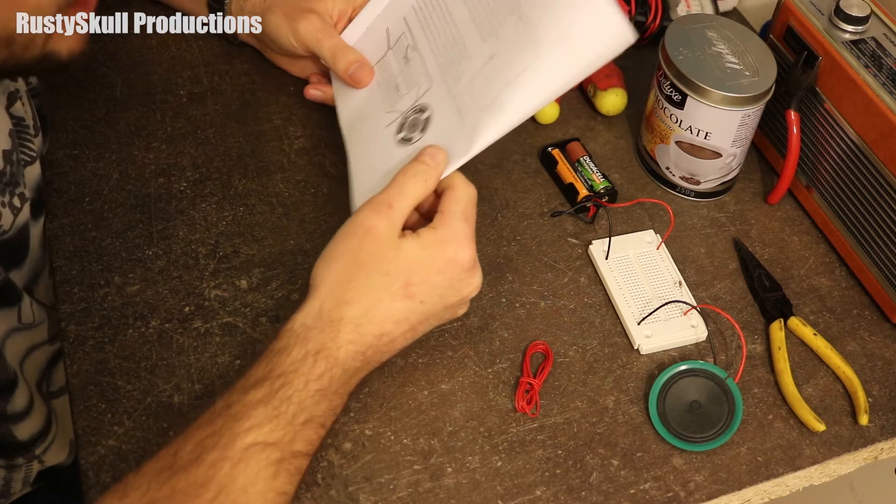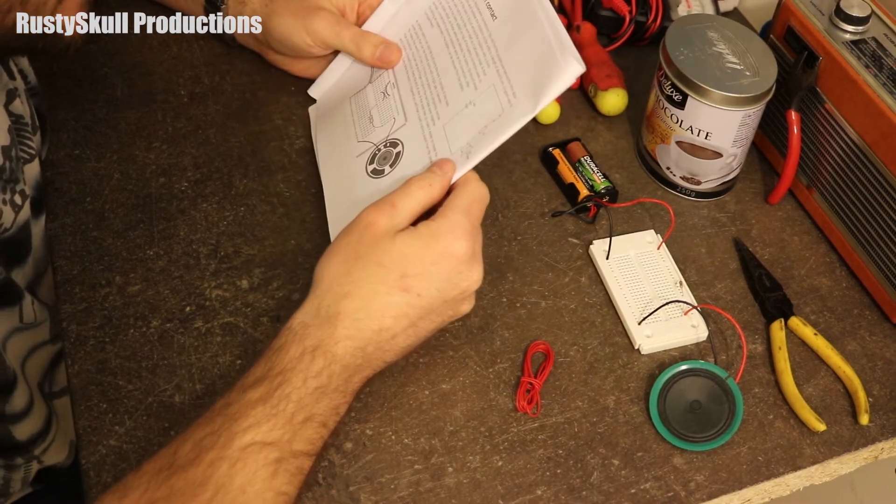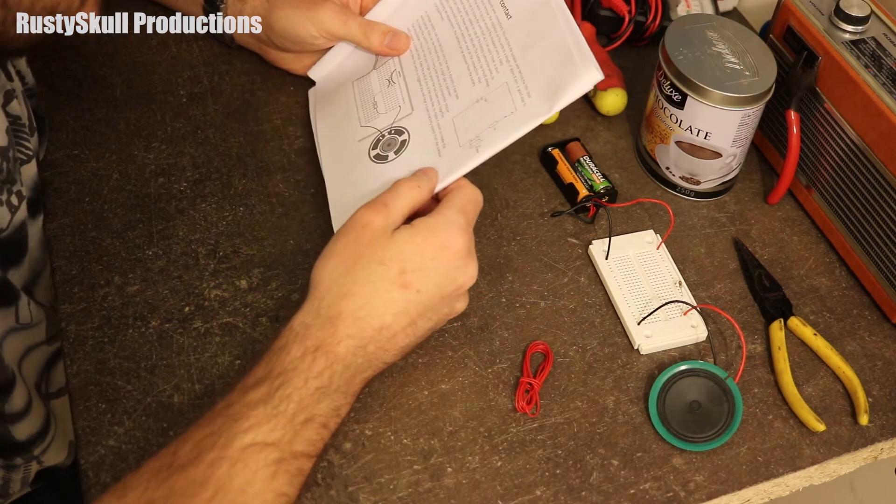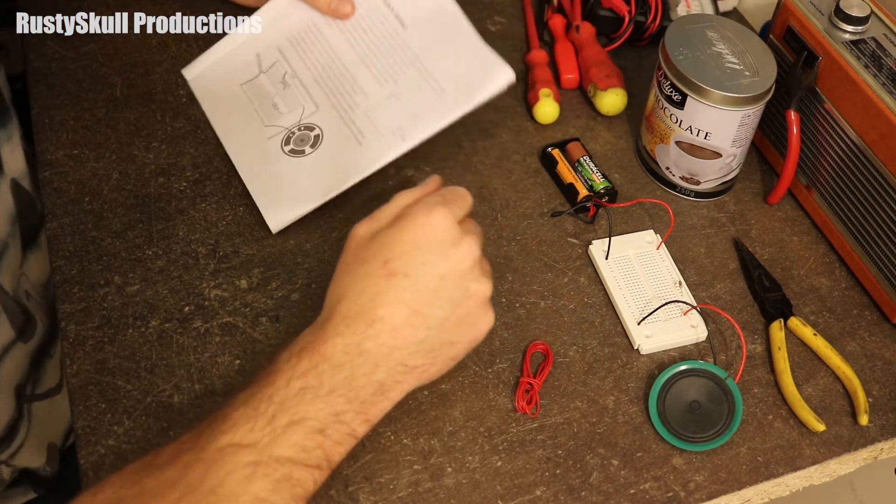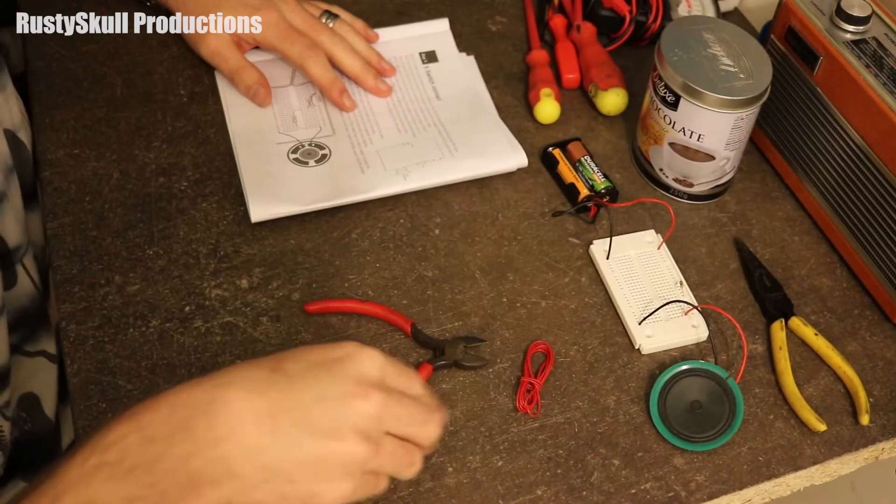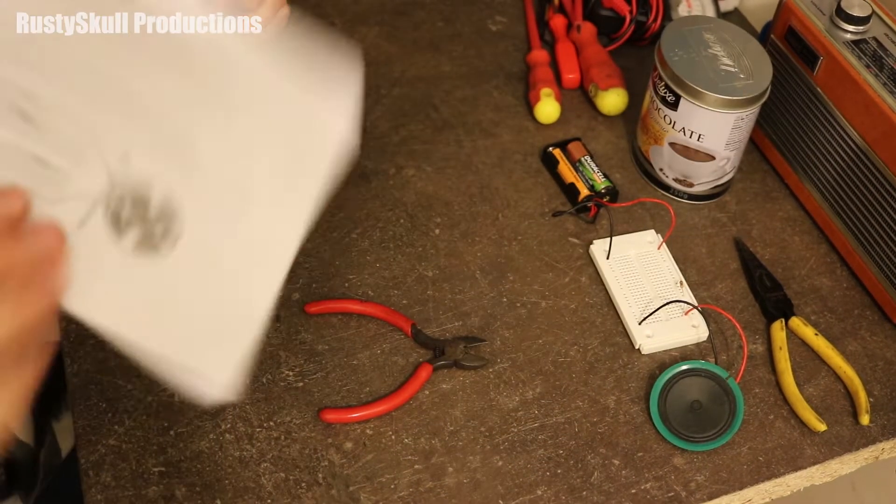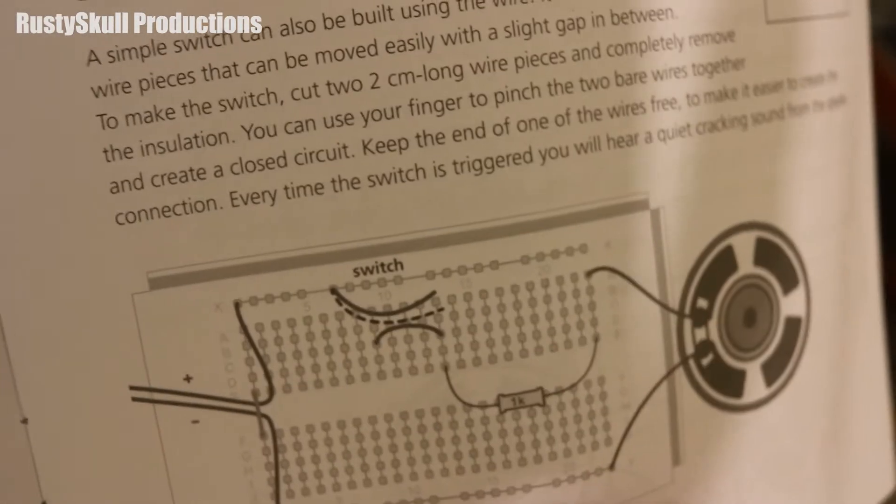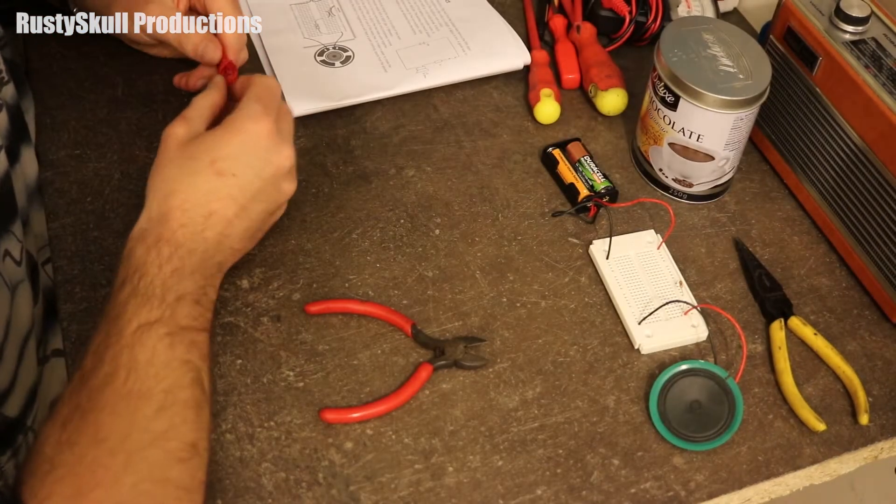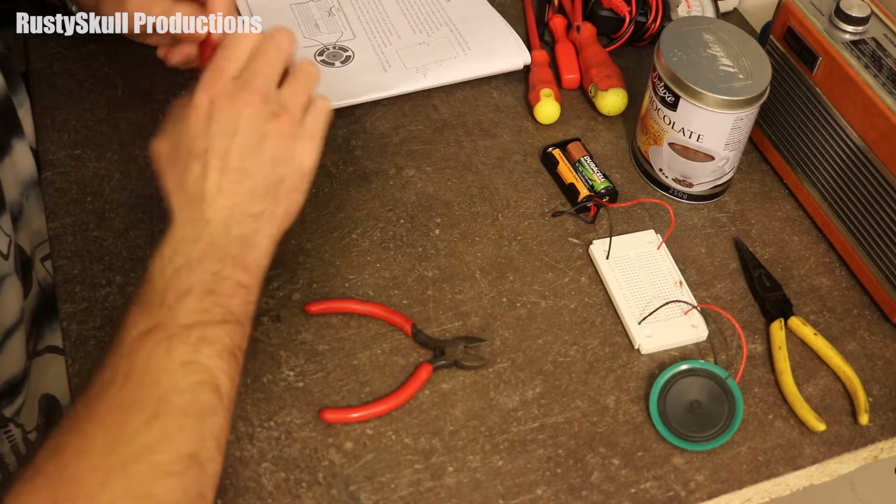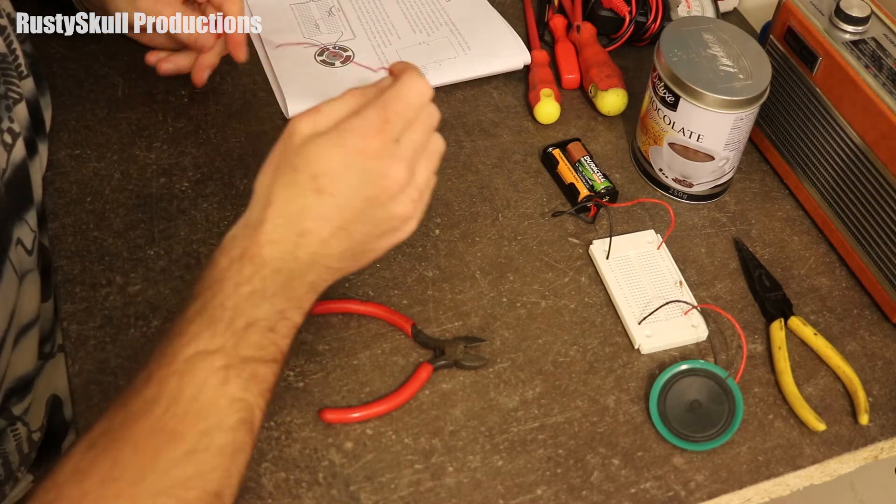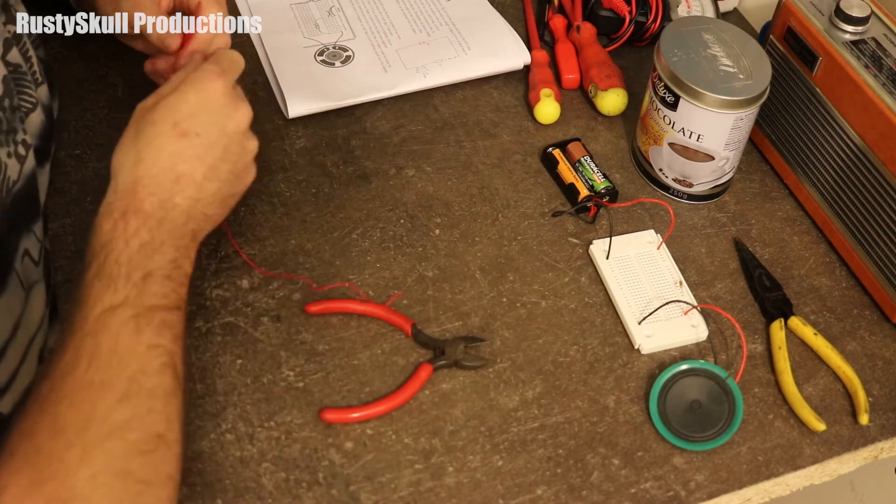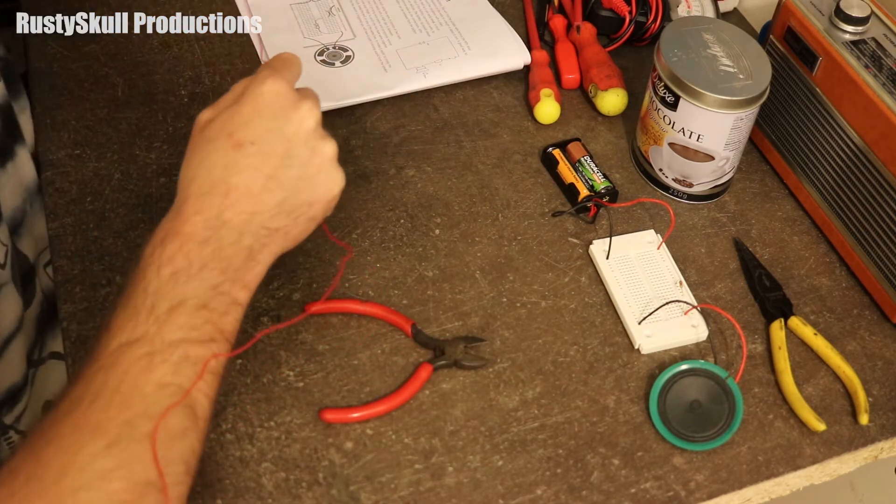We've got our 8 ohm speaker, we've got our 1k resistor, we've got our 3 volt battery, and we've got our little switch in line. This is what it wants us to do. Good job I left it all in line. It wants us to unwrap this wire and make a switch. It wants us to put a strain relief on there and put a bit of a switch.